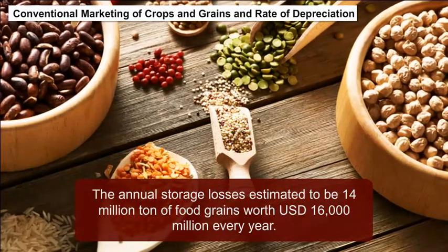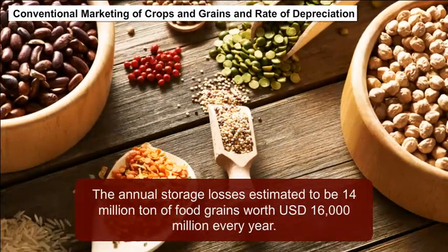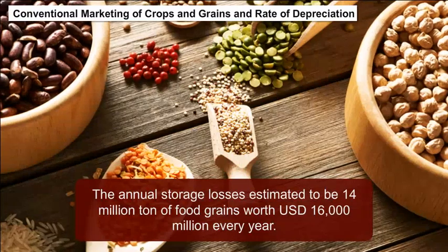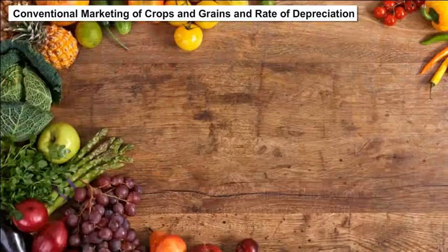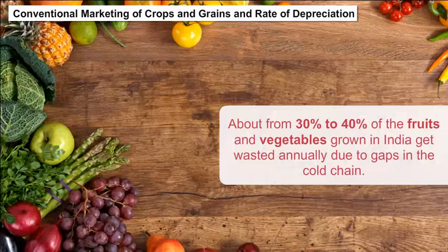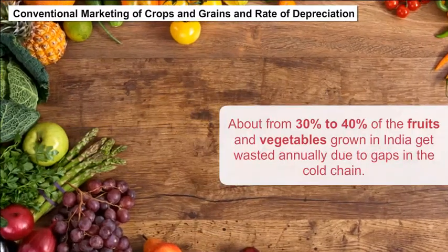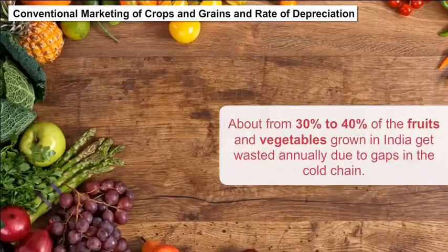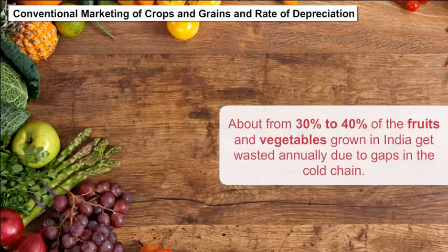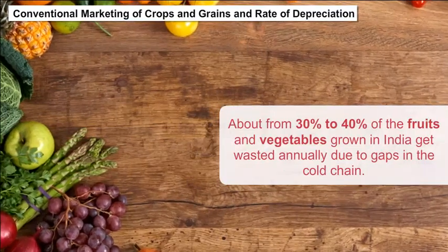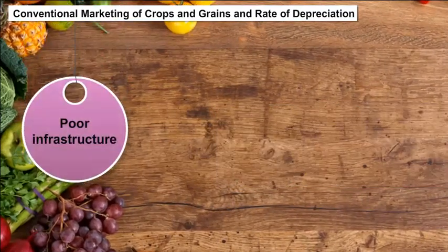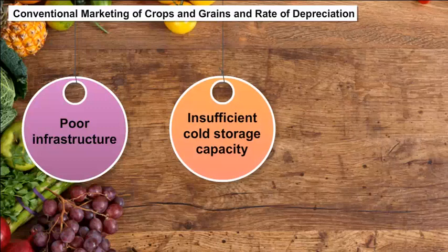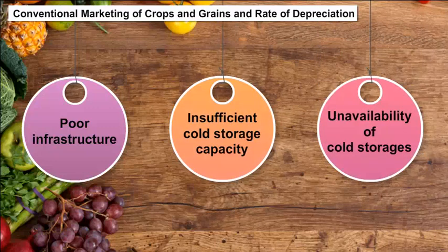The annual storage losses are estimated to be 14 million tons of food grains worth USD $16,000 million every year. About 30% to 40% of the fruits and vegetables grown in India get wasted annually due to gaps in the cold chain such as poor infrastructure, insufficient cold storage capacity, and unavailability of cold storages.